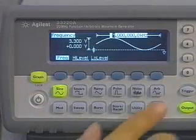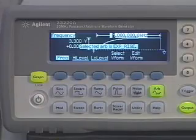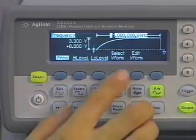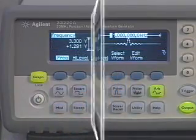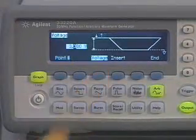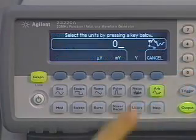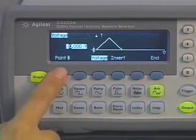The 33220A comes with five preloaded arbitrary waveforms. Four non-volatile and one-volatile memory locations are available for user-defined waveforms. Each user-defined waveform can contain between two points and 65,536 points.